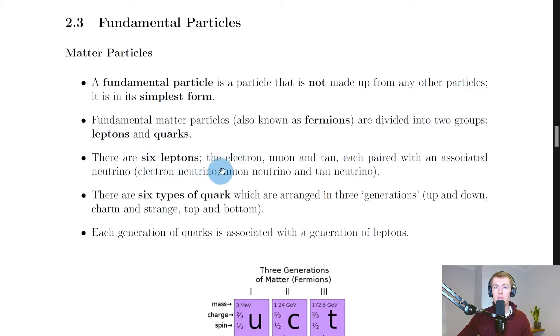It says that there are six leptons. So we have the electron, muon, and tau particles, each paired with an associated neutrino. And these are the electron neutrino, muon neutrino, and tau neutrino.